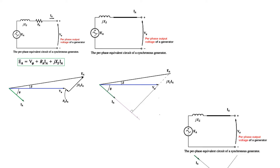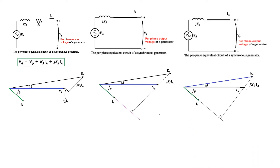Now we go the opposite direction. If EA is given and we need to find V-phase — which is the case in the question we'll be solving — from EA we draw a perpendicular, and wherever it touches the voltage axis is the end point of V-phi. This length will be jXs·Ia.